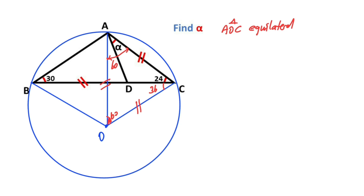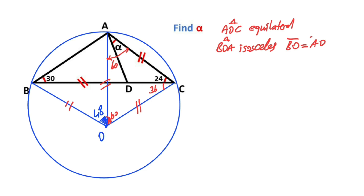Notice that if here is 24 degrees, this angle must equal 48 degrees because of the center angle. This side must equal the others because of the radius, so this triangle is an isoceles triangle. Therefore BO must equal AO, and the base angles equal (180 minus 48) over 2, which means the base angles equal 66 degrees. So 36 degrees is left here.